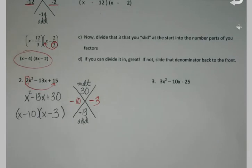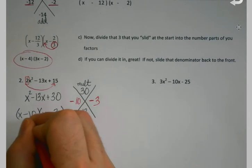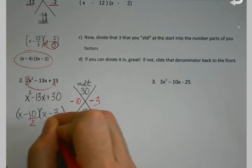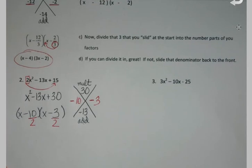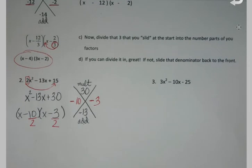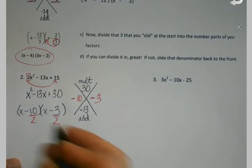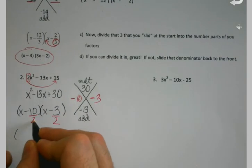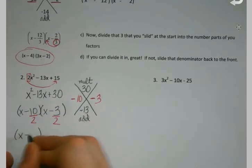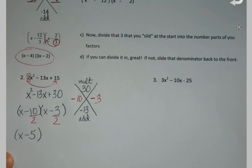The number part, I go ahead and divide by whatever's out here in the front. If it goes in nice, 10 divided by 2 is 5, so that goes in nice. I just go ahead and simplify it.